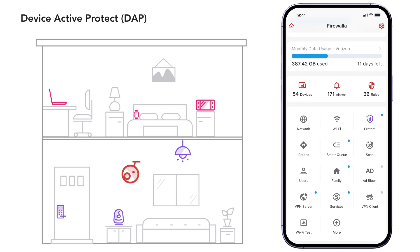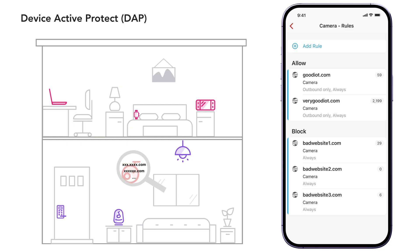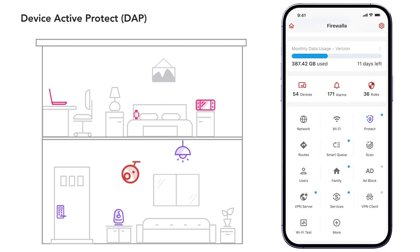Traditionally, new IoT devices added to your network are trusted by default. If you want to restrict their access, you have to manually examine their flows and only allow what's needed for them to function properly. DAP is a new Zero Trust feature that automatically gives each IoT device the minimum access it needs to work.